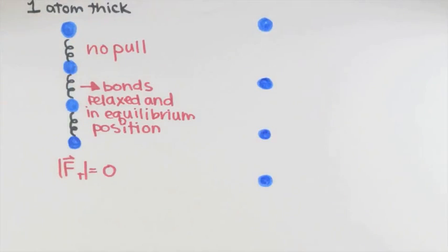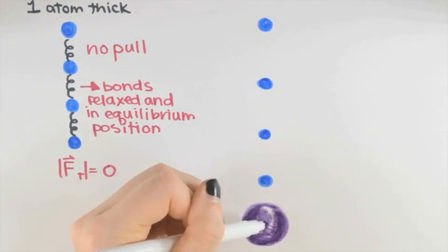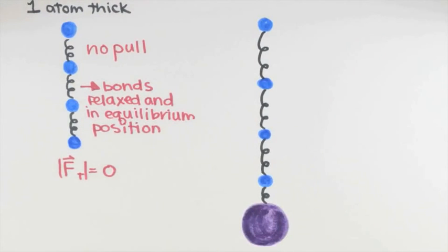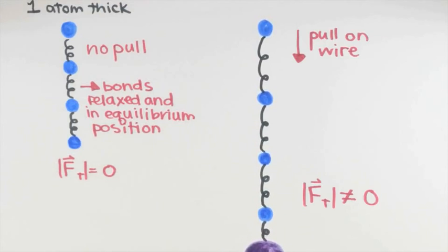However, if we tie the wire to some object, like this big ball shown here, and we pull on the wire, then there's a tension in the wire that we can think about as arising from the stretched bonds behaving like springs.